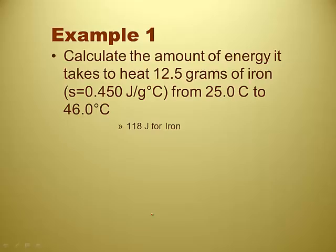Calculate the amount of energy it takes to heat 12.5 grams of iron, a specific heat of 0.450 joules per gram degree Celsius from 25 degrees to 46.0 degrees Celsius. Well, this is just going to be writing out the reaction, just writing the equation and putting everything in its right spot, right?